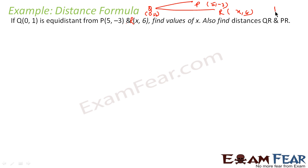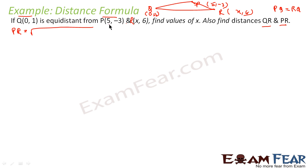The question says PQ is equal to RQ. We have to find the value of x, and also the distances QR and PR. To find x, we need PQ and QR since they are the same. PQ is the distance between P and Q, which is root of (0-5)² + (1-(-3))², giving root of 5² + 4².